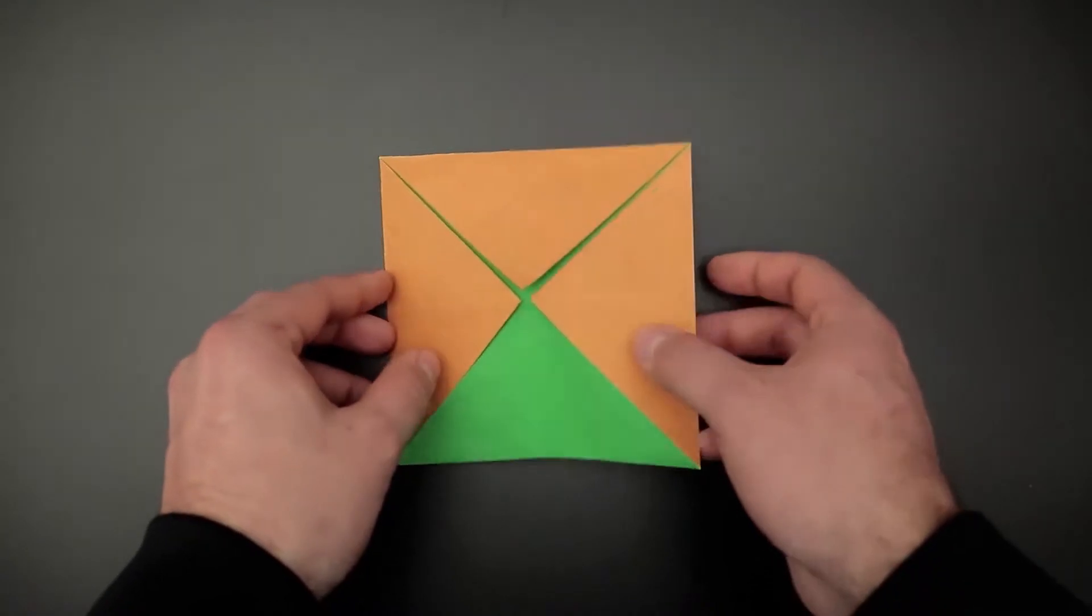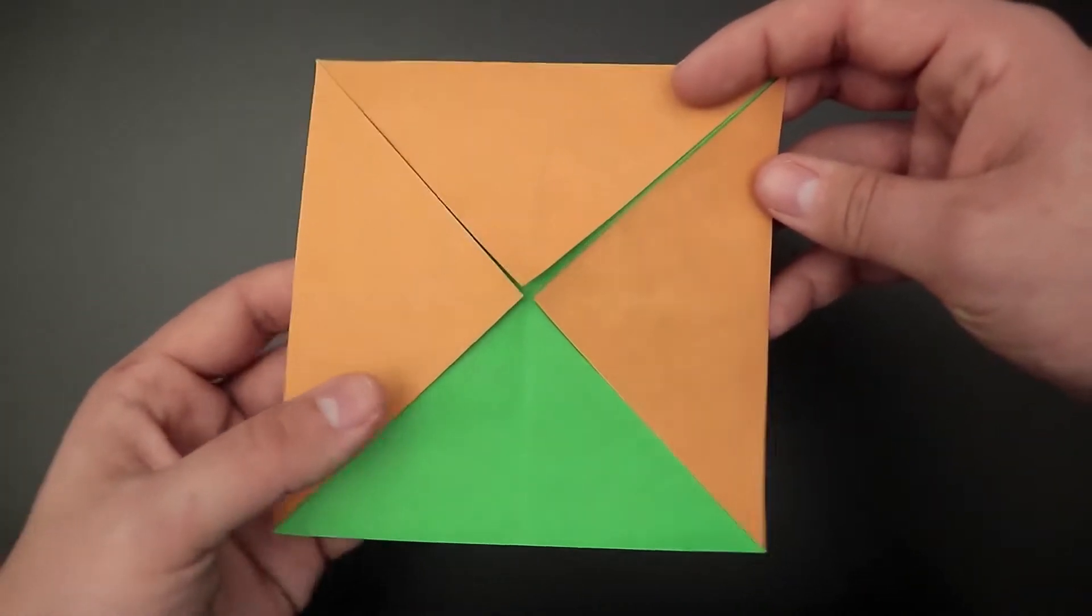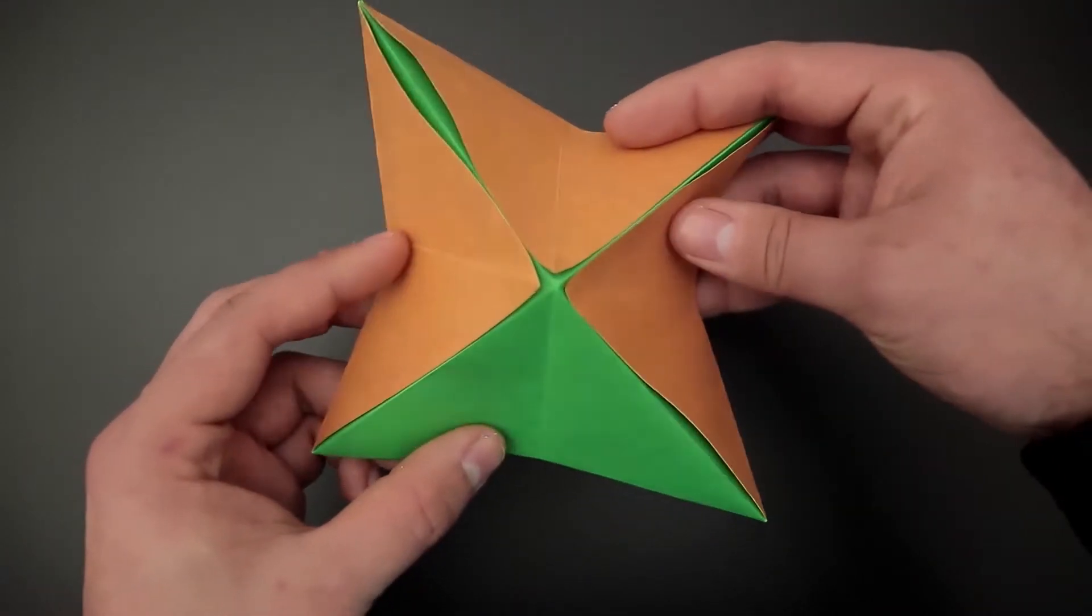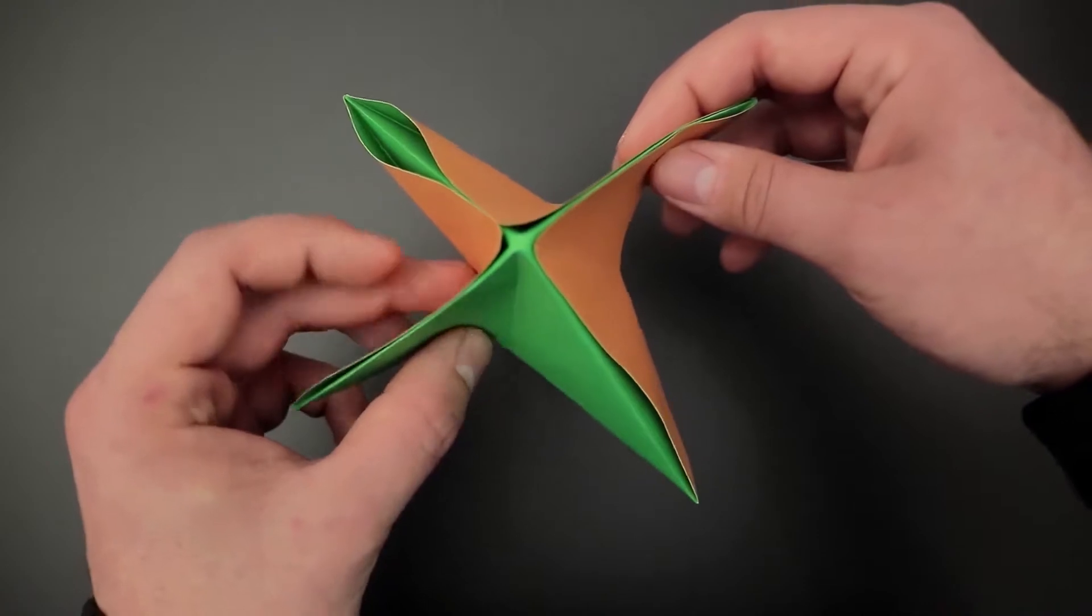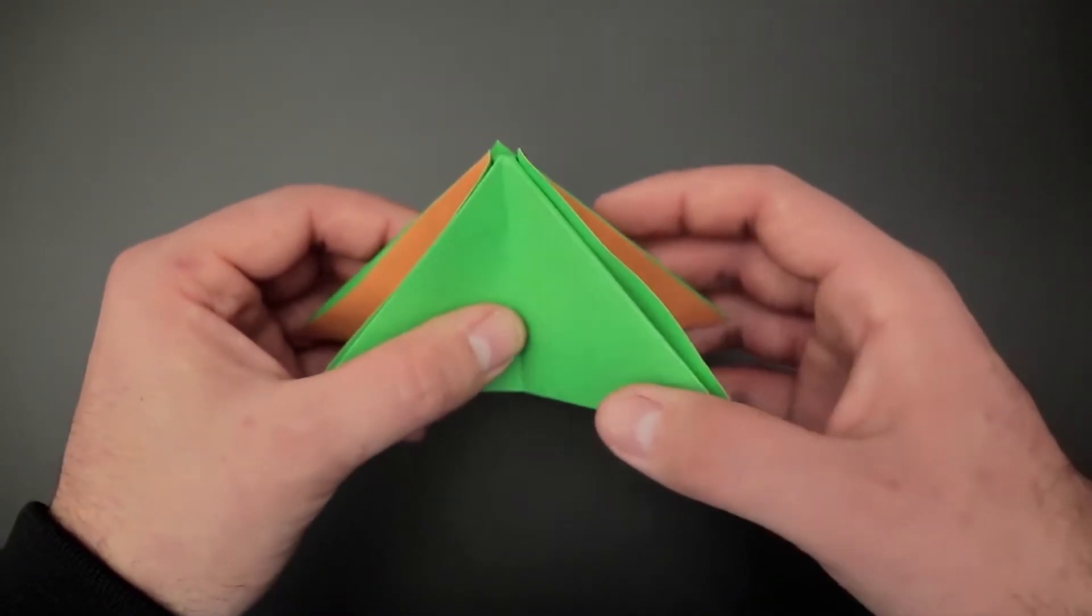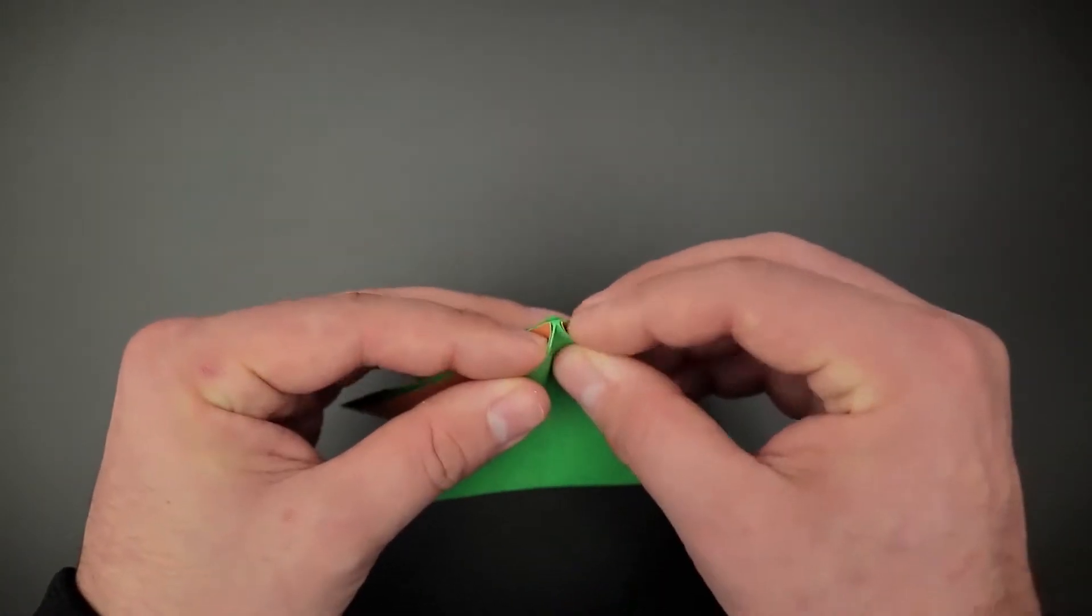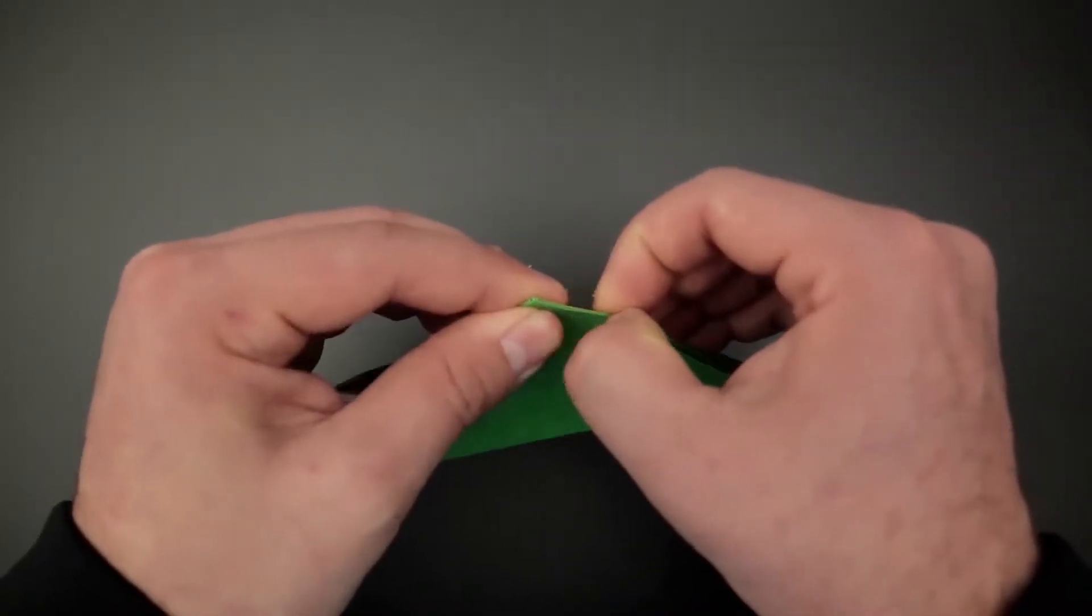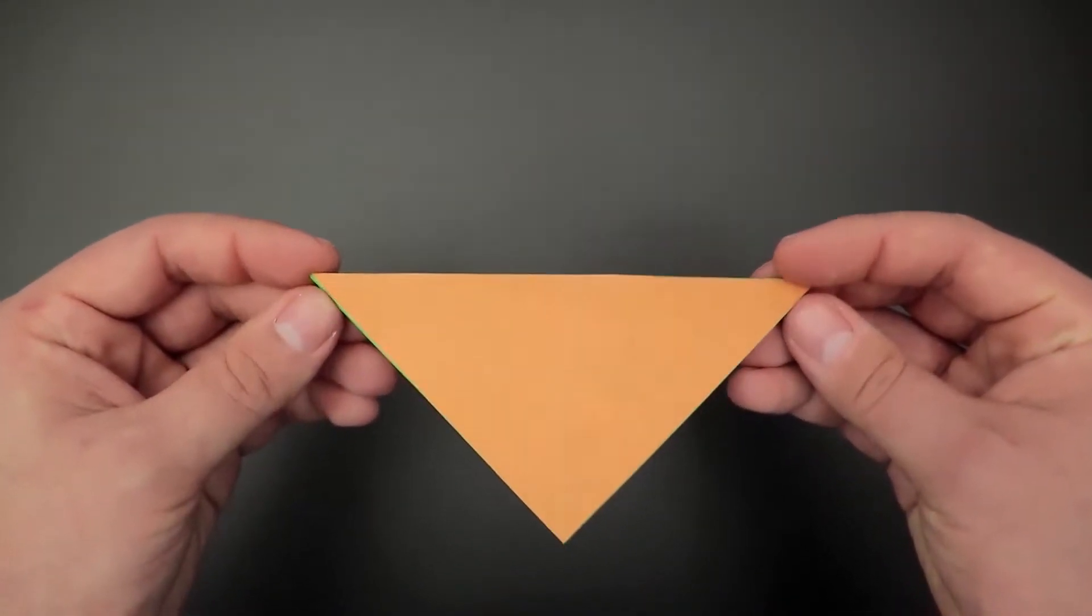Keeping the paper in this position, we have to close by pushing the four sides to the middle. Close two flaps for each side, and reinforce very well. Now we have a triangle, one side is green, and three sides are orange.